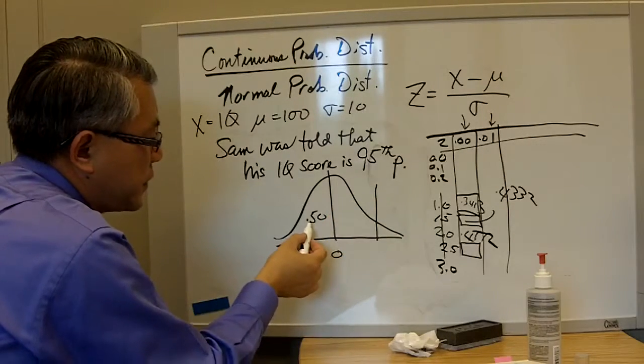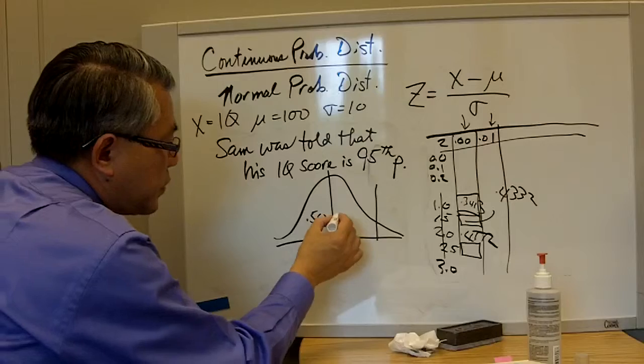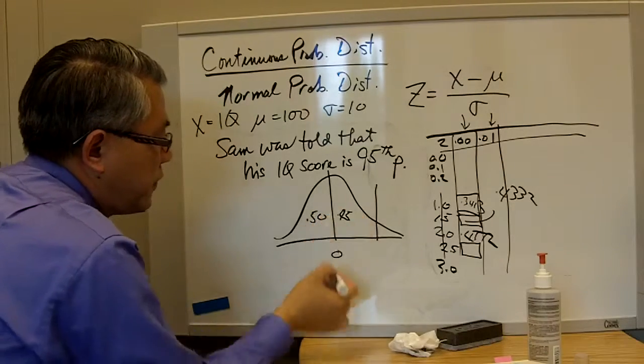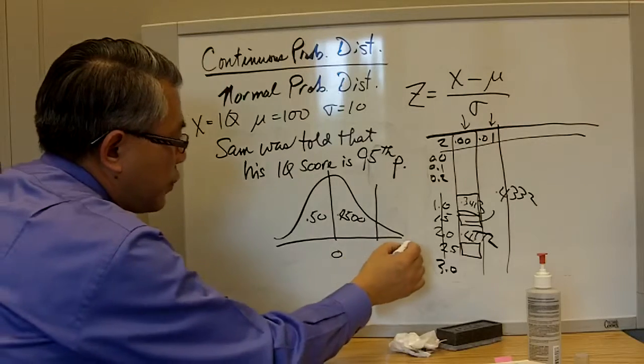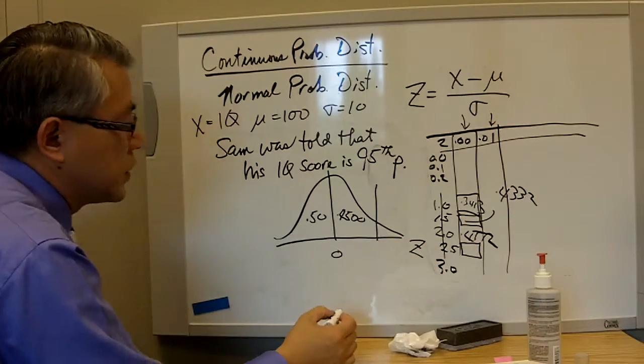but we are going to look at the 95th percentile. The 95th is the same as 50% plus 45%, so I will put 0.4500 here, and see what would be the equivalent Z score.